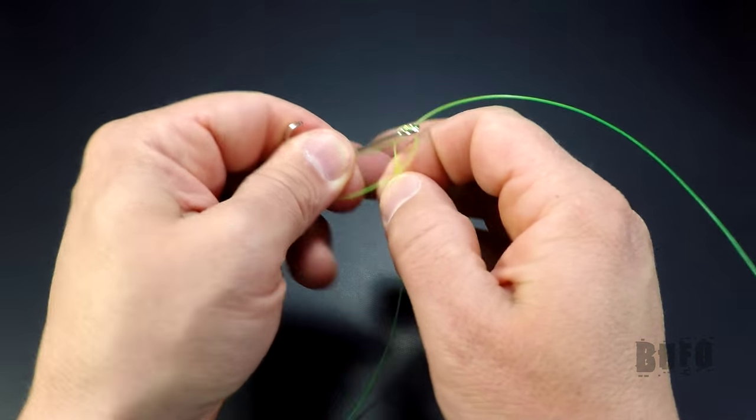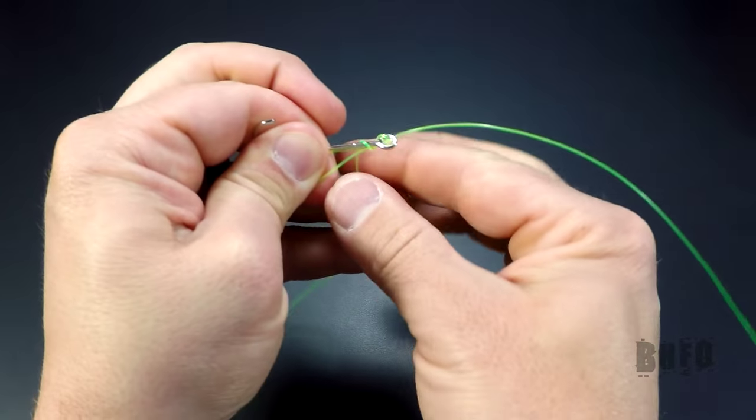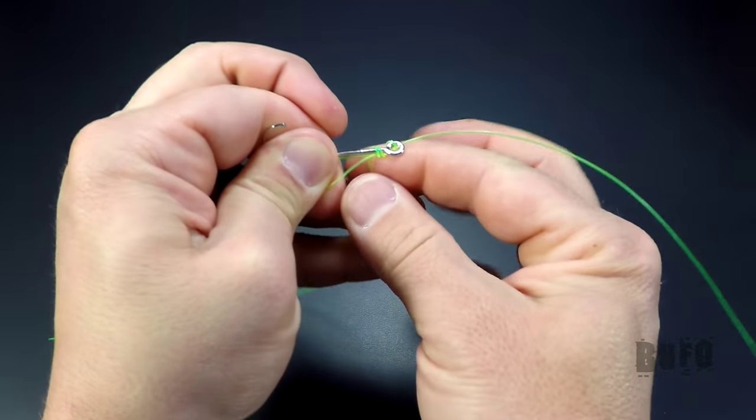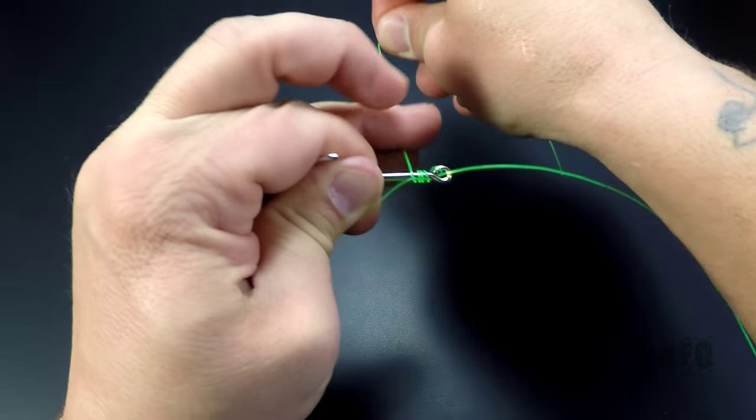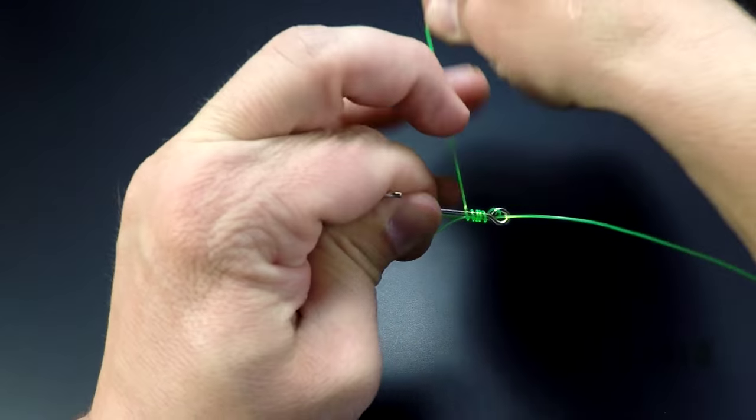Take the tag, wrap it 4 to 10 times around the shank, starting at the eye and working your way down to the bend, keeping it as tight as possible.